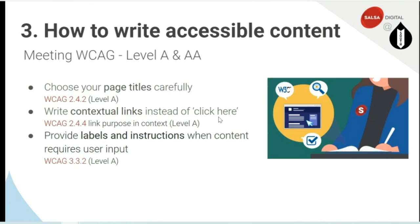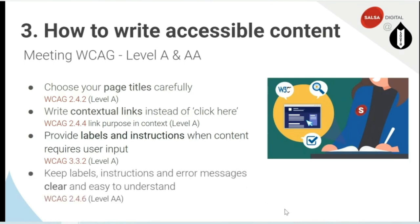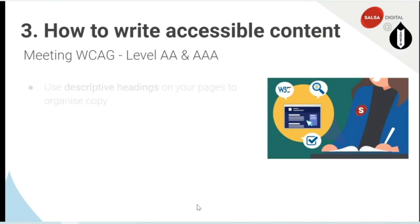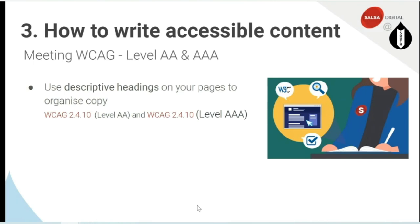Provide labels and instructions when content requires user input — WCAG 3.3.2, Level A, mostly applies to forms. If you've got forms on your website, make sure you include some instructional content or that it's clear with a heading of 'name' or whatever information needs to be put into that box. Similarly, keep labels, instructions and error messages clear and easy to understand — that takes us into Level AA. Also use descriptive headings on your pages to organise copy — WCAG 2.4.10, Level AA and Level AAA — and this nicely correlates with our writing for scanning. So you have three reasons to use descriptive headings: one is for scanning, one is for SEO, and one is for accessibility requirements.